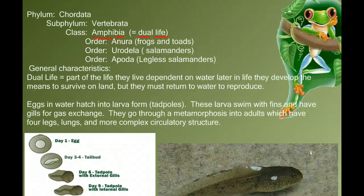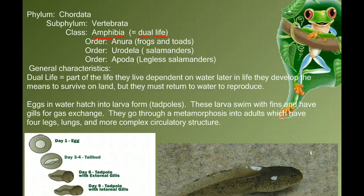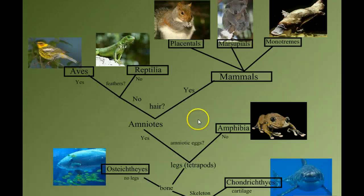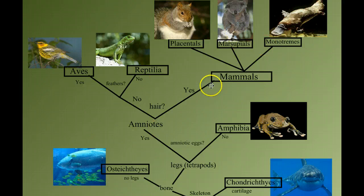The biggest thing for us here is that the amphibians represent a transition. Not only do amphibians go through a transition from water to land, but for us they represent the transition from the fish to the terrestrial animals. They are in between.